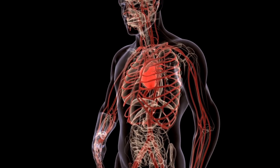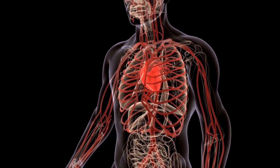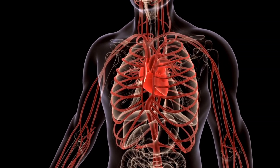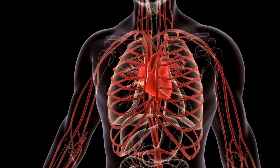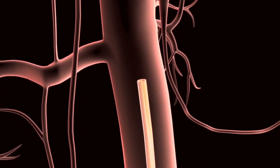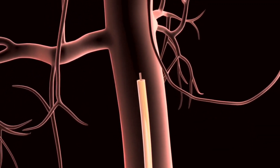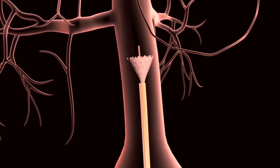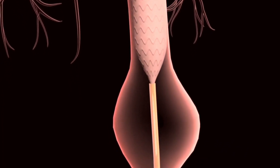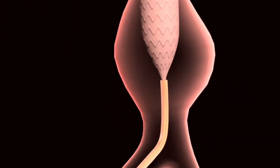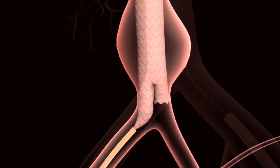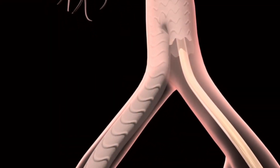Symptoms include sudden tearing pain in your chest or upper back. Surgery is the option before rupturing. A guide wire is threaded through the femoral artery into the aorta. A catheter containing the stent graft is guided over the wire and positioned inside the aneurysm. Then the stent graft is opened, forming a stable channel for blood flow.